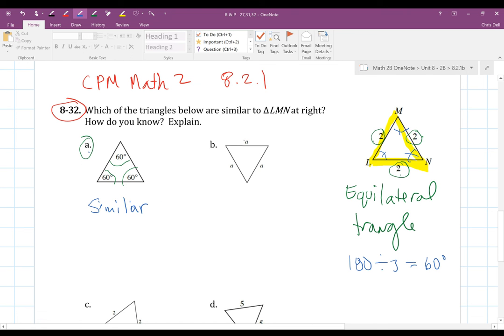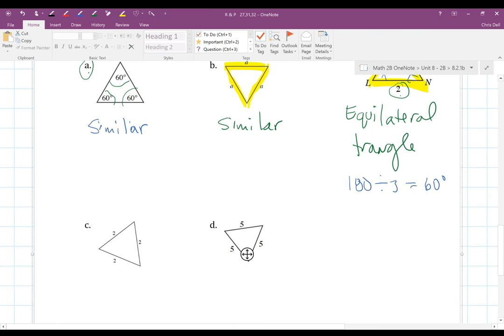B, if we look at B, it says that each of these side lengths, a, a, a, they're all equal to this variable a. So they are all equal to each other, so a is equal to a which is equal to a. So once again, yes, this would also be a similar triangle.